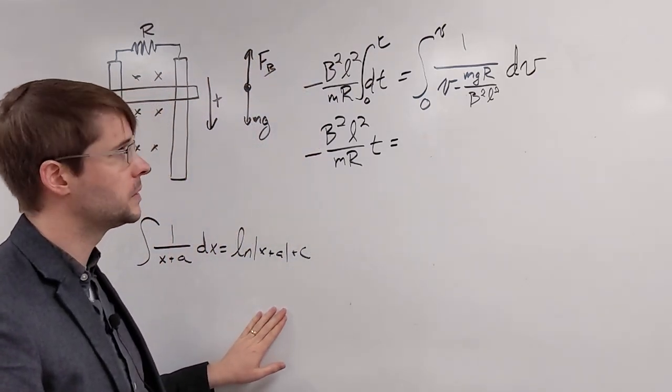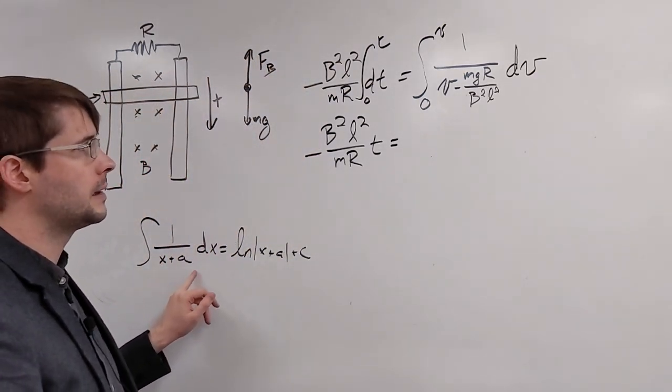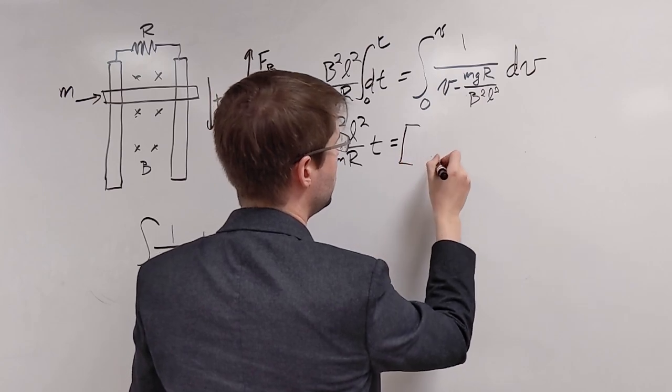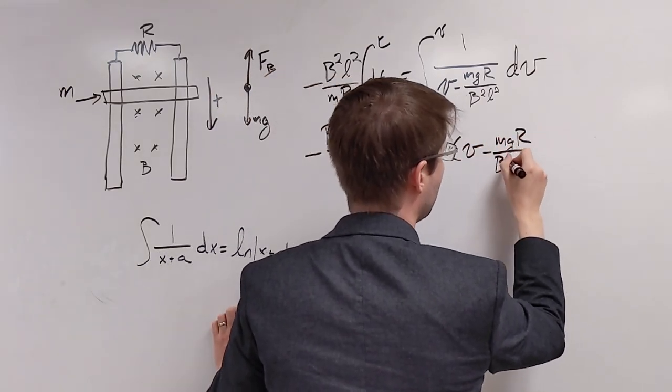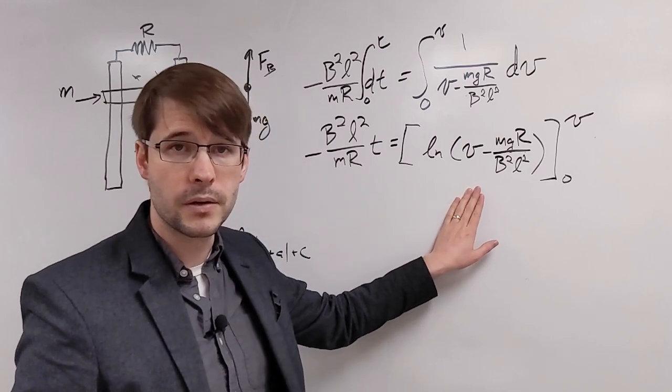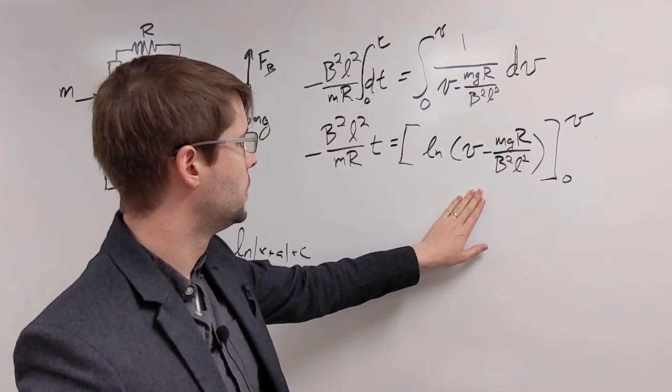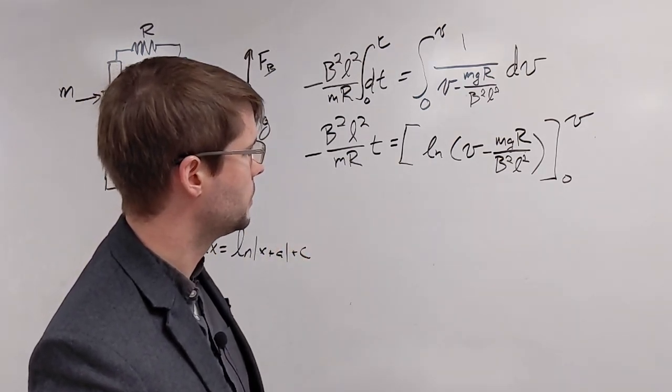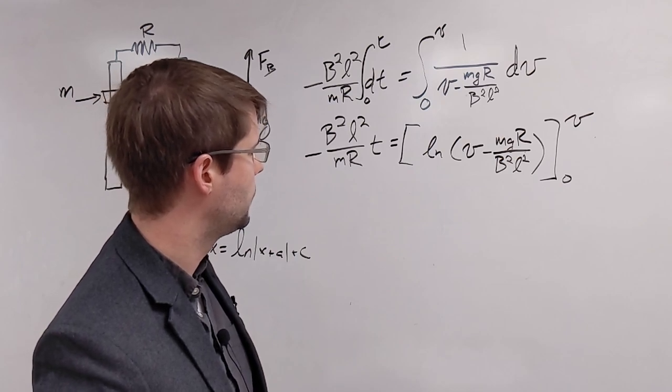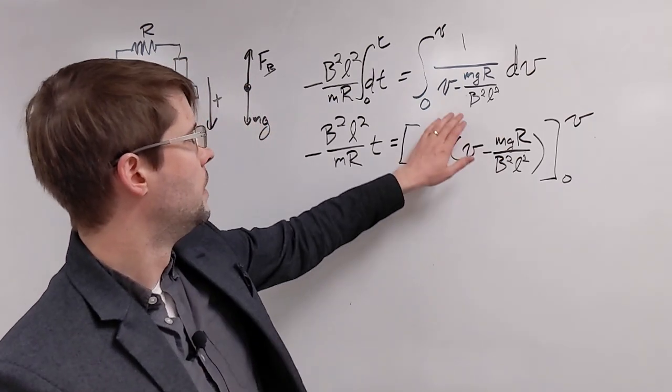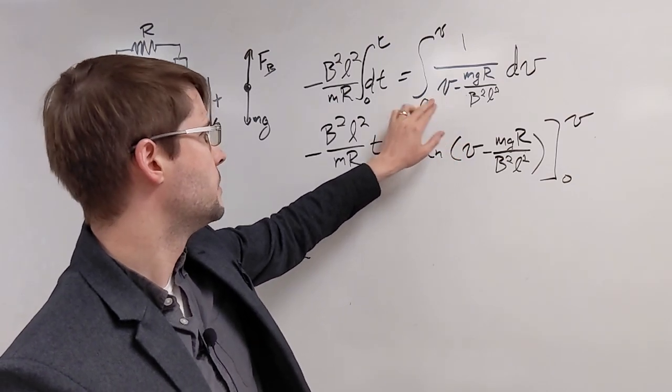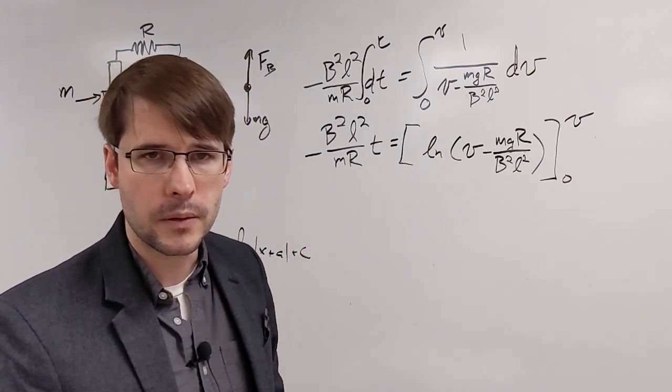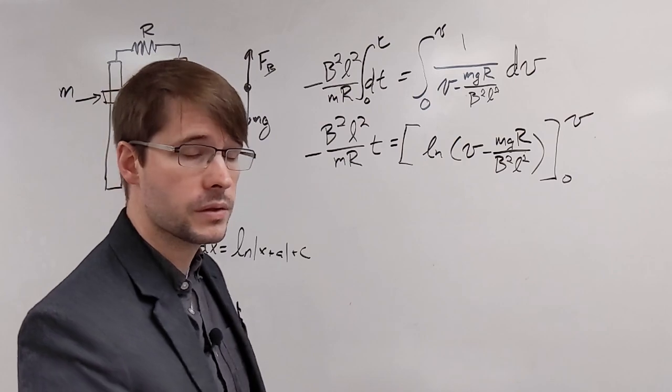So notice this looks a lot like x plus a. And so what we can say is that this actually just evaluates to be this right here, just the natural log of what we had right there. As long as this stays positive, we don't have to worry about the absolute value in there as well. And I like to do that part where I pull the constants out because I think it makes this step a little easier. If you prefer to just do a u substitution and do it that way instead, feel free. You'll get the same results at the end.